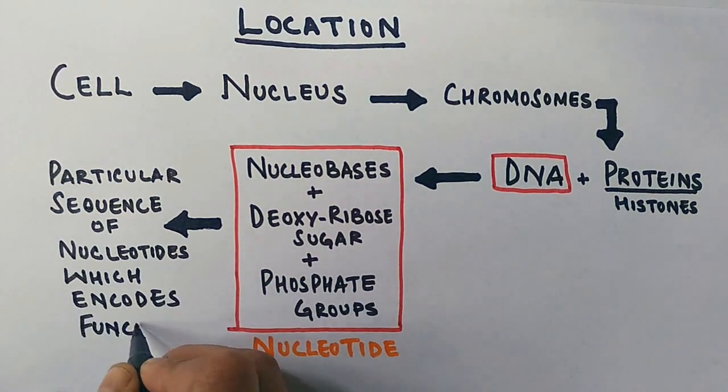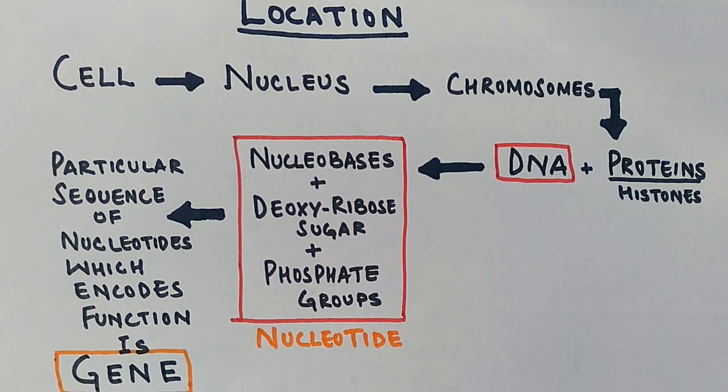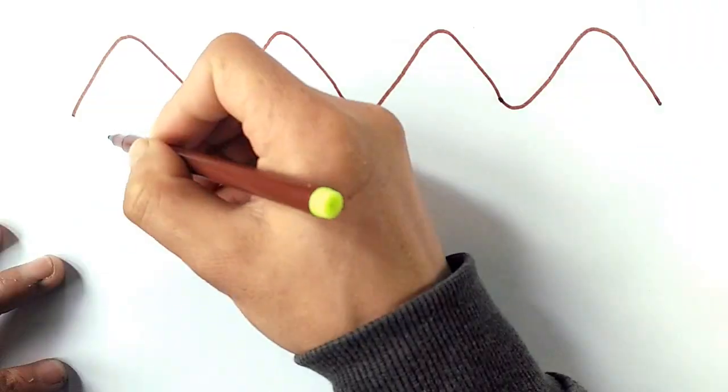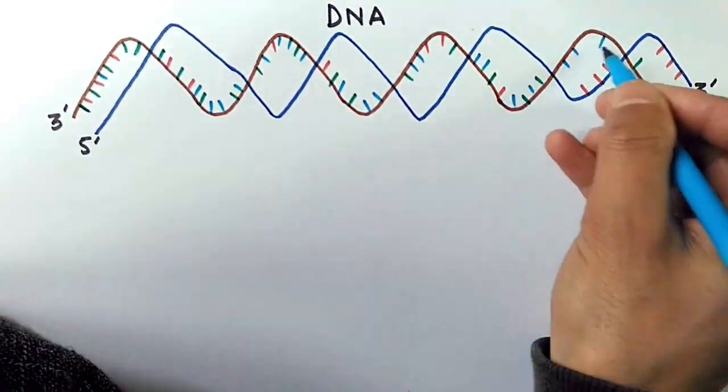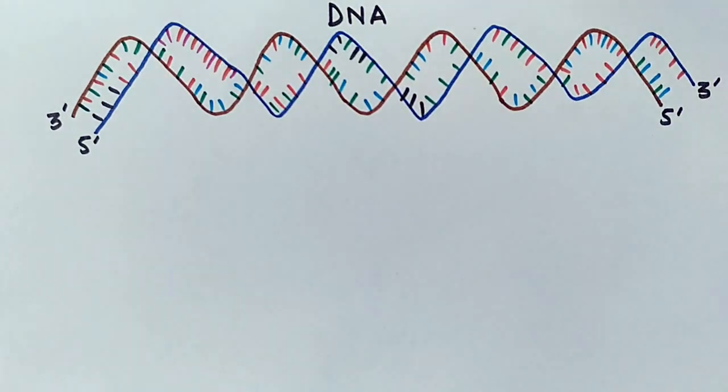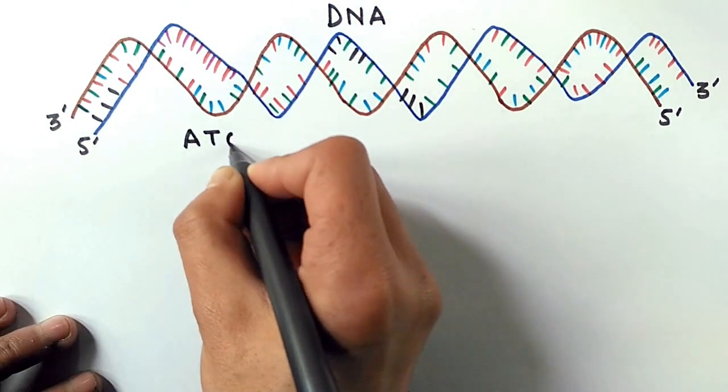And this nucleotide, the particular sequence of nucleotides which encodes any function is gene. So this is the gene nucleotide sequence, a particular nucleotide sequence. Let's see in this diagram, we have a DNA, complete DNA here, it has got millions of genes in it, but a complete DNA molecule does not represent a gene, but the segments in it represent a gene.